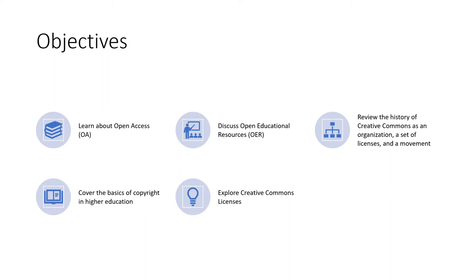In this video, we will learn about Open Access, or OA; discuss Open Educational Resources, also known as OER; review the history of Creative Commons as an organization, a set of licenses, and a movement; cover the basics of copyright in higher education; and finally, explore Creative Commons licenses that you may choose to use with your resources as you explore Open Educational Resources.